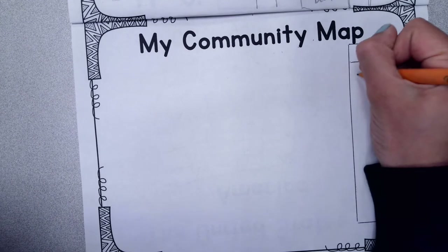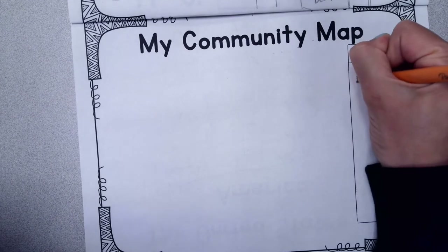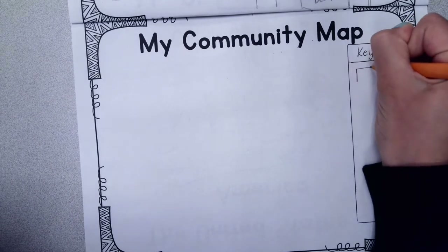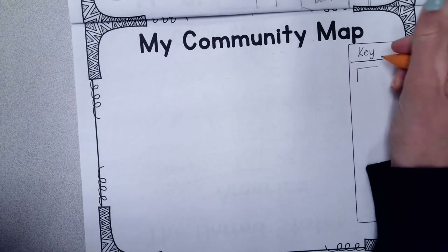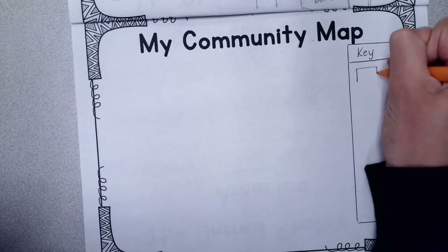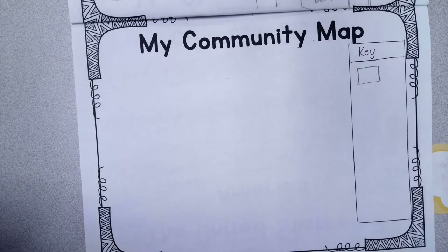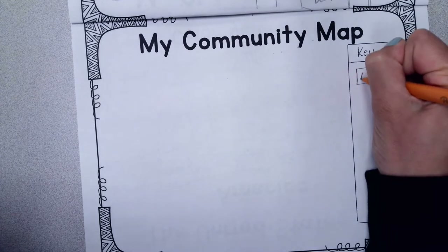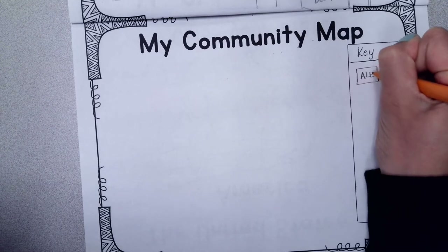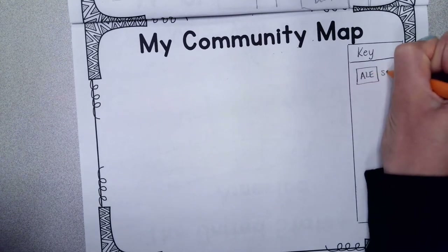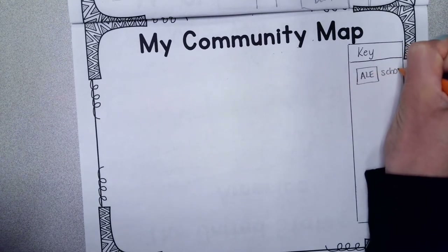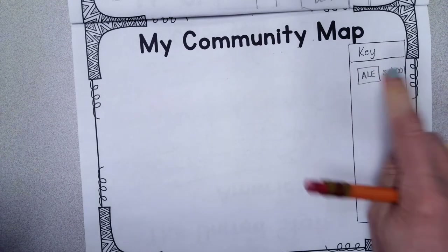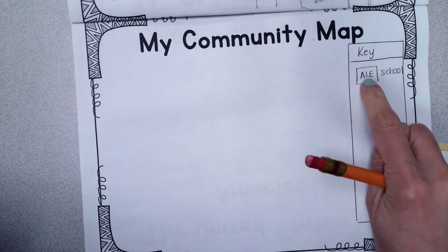So first thing, since we're doing it around Abraham Lincoln, I'm going to draw Abraham Lincoln. I'm just going to put it as a big rectangle and label it A-L-E, and that's our school. When I put it on my map, I'm also going to label it A-L-E.